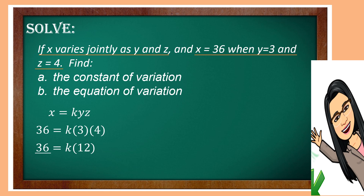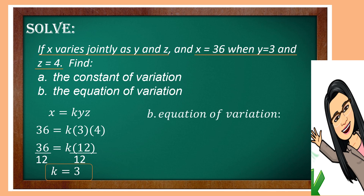Then divide both sides by 12. So the value of K is equal to 3. This is the constant of variation. Now, using the constant of variation, we can get the equation by substituting the value of K: X is equal to 3 times Y times Z.